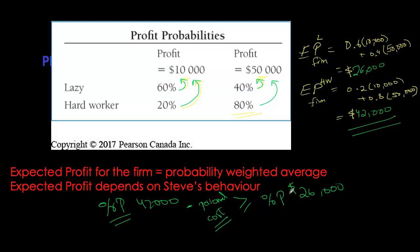If Steve is shirking or just using Facebook all day, we can assume personal costs in that case are very low or almost zero. Setting up this problem, we can solve for the minimum fixed percentage required to incentivize Steve to always work hard and not shirk as manager of the corporation. Tying the manager's payoffs to the profitability of the firm is one way of reducing moral hazard.